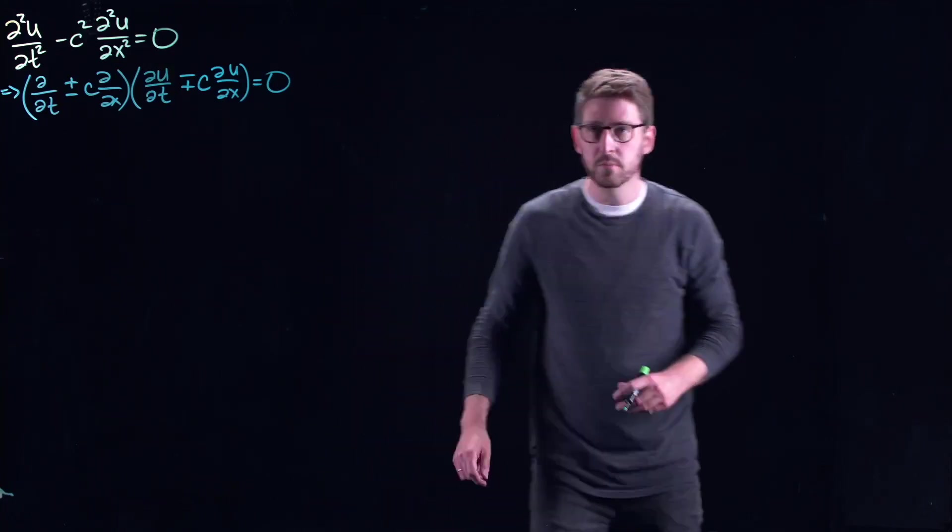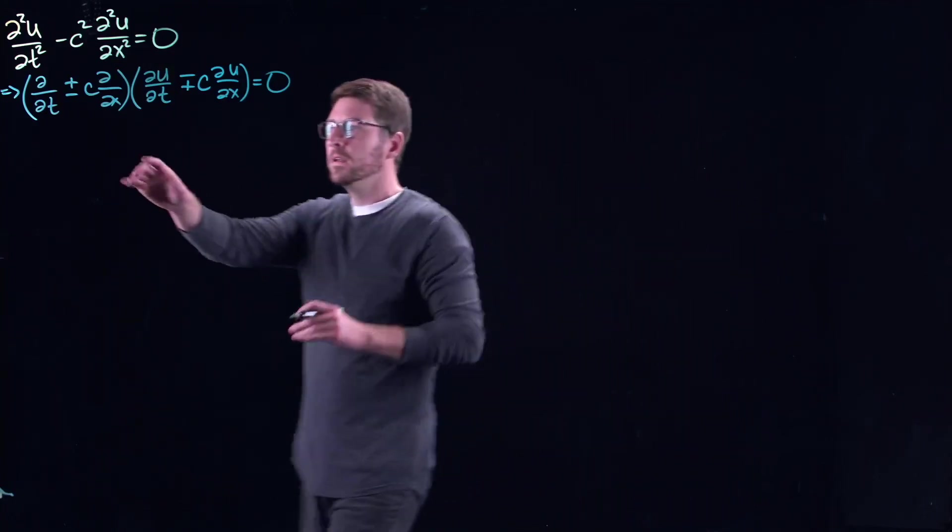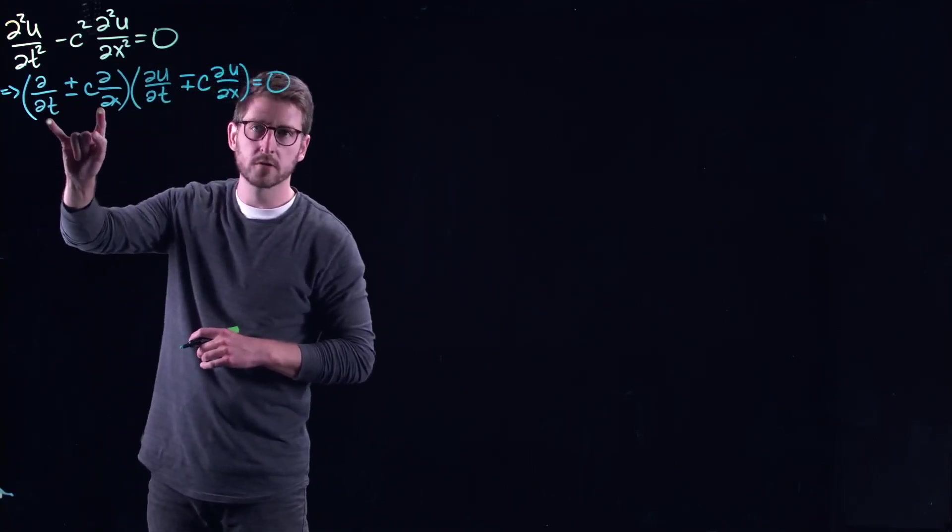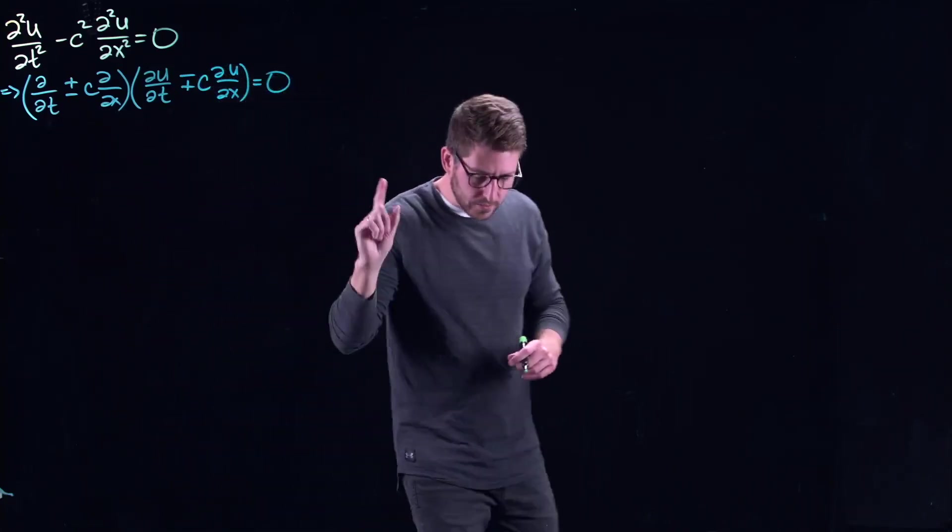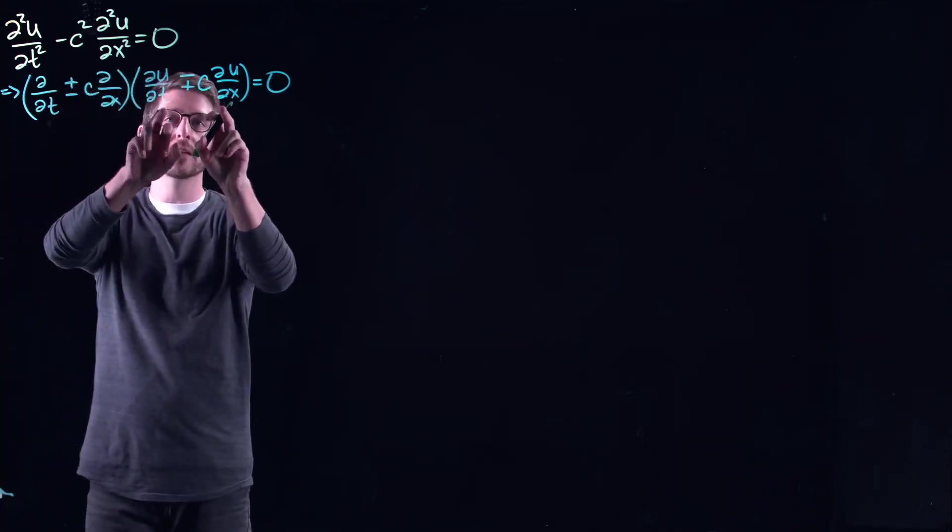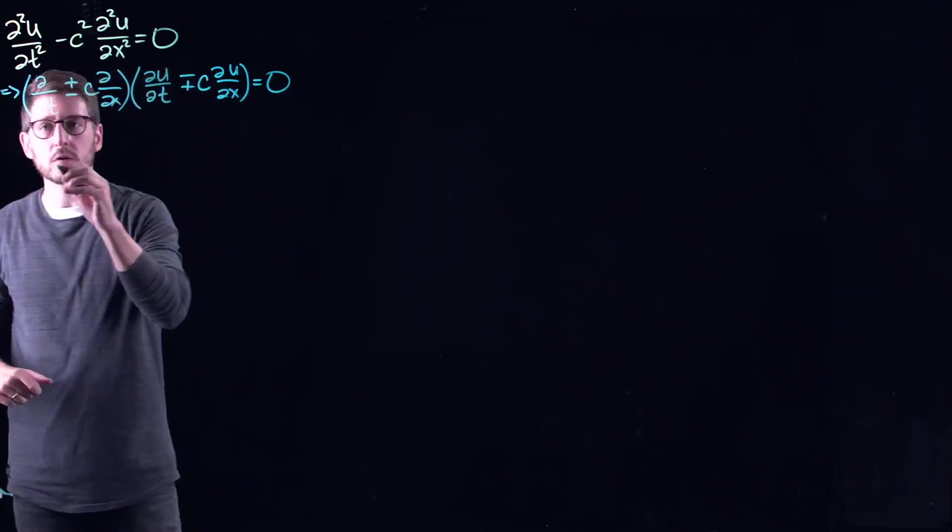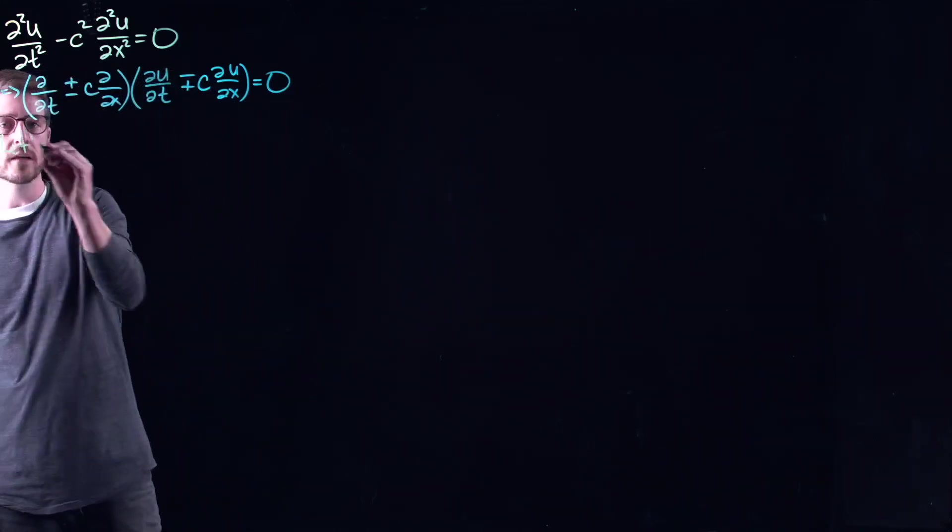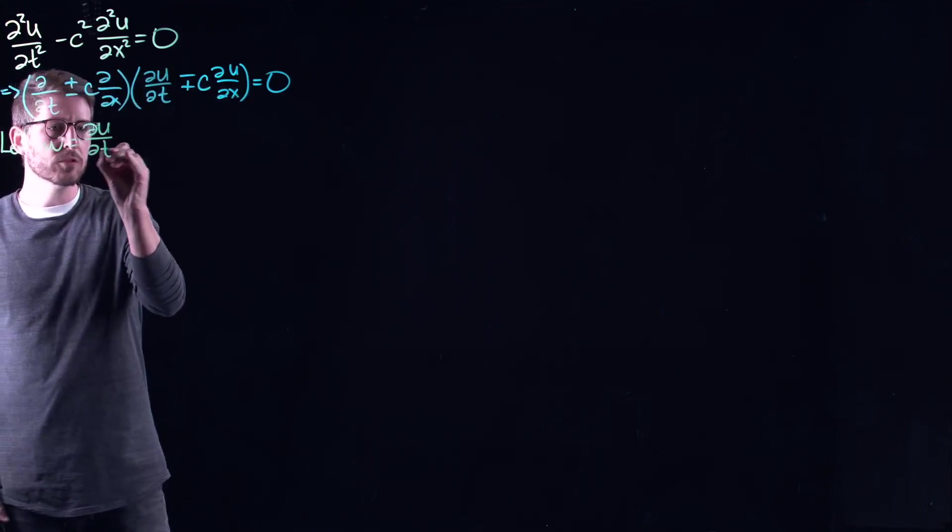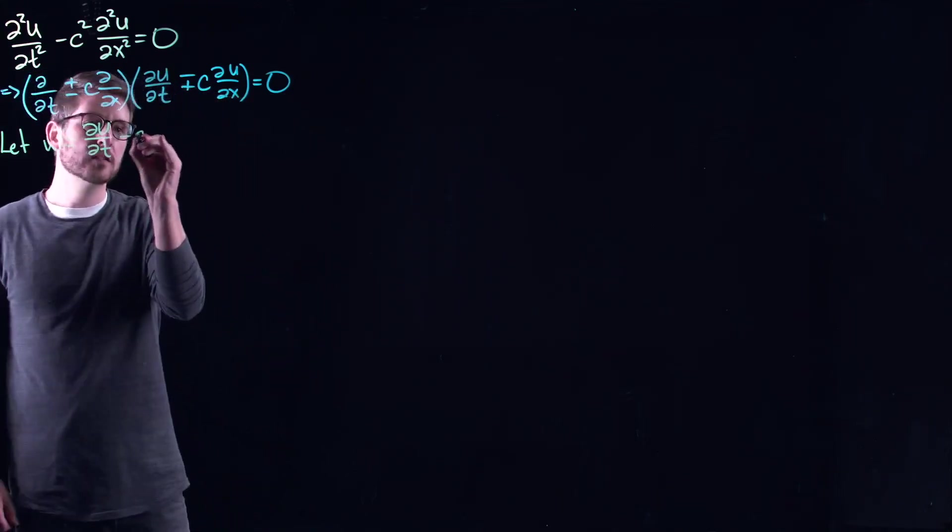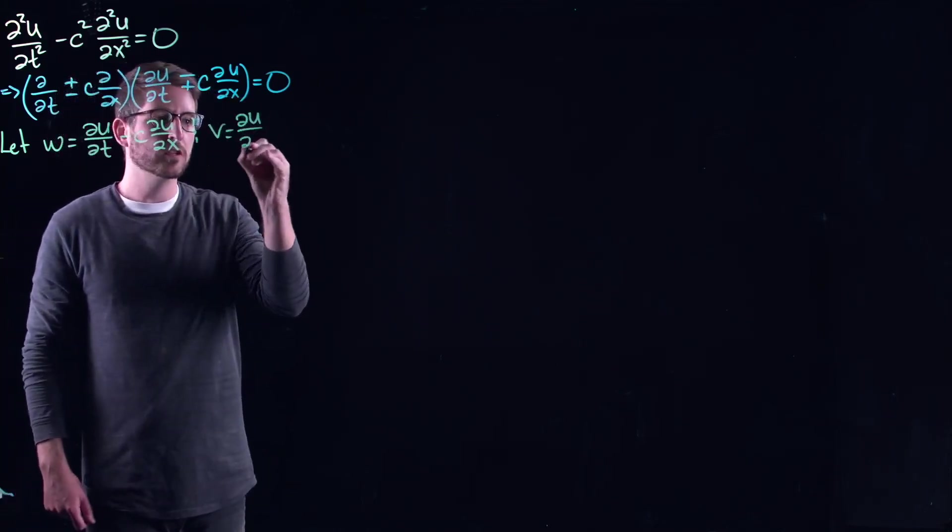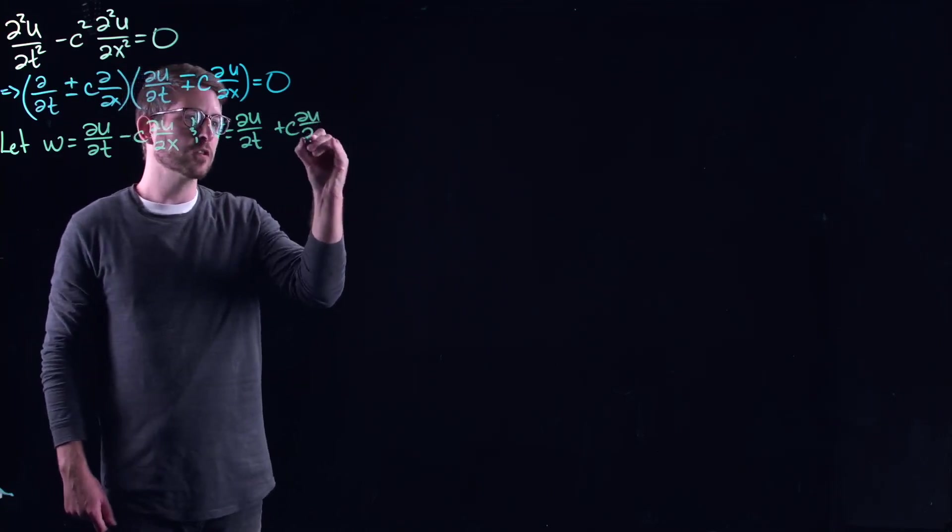And take a look here. The partial is applied to u only. In this case this is just sums or differences of partial derivatives. Now essentially what you can see here is that by solving this thing equal to zero you're solving this piece equal to zero. So what you could do is introduce some intermediate variables. Let's say let w equal the partial of u with respect to t minus c partial u/partial x and let v be the other one, partial u/partial t plus c partial u/partial x.